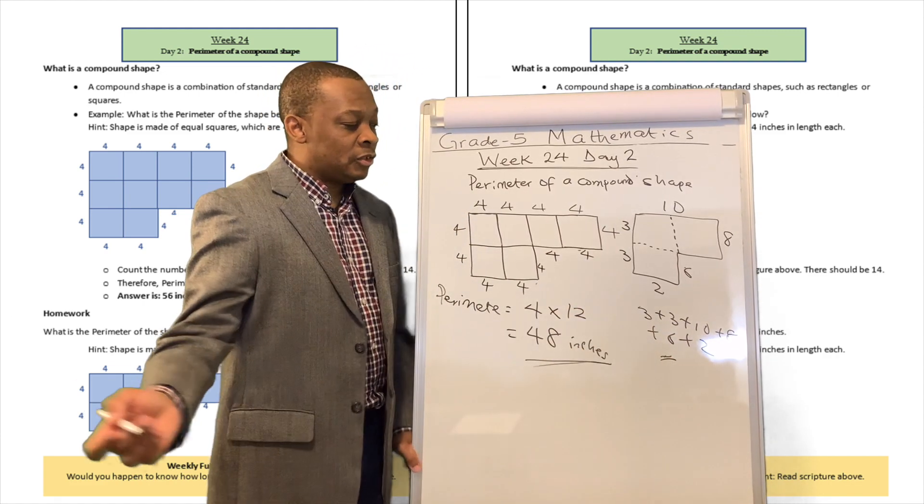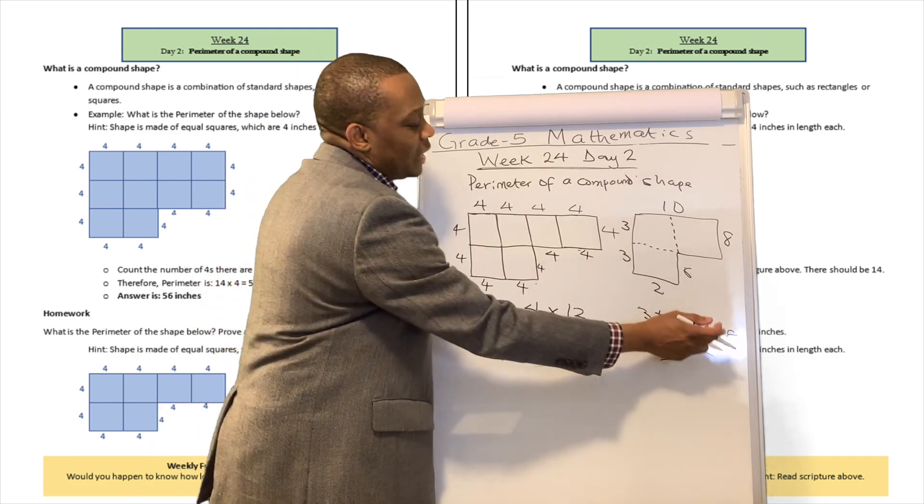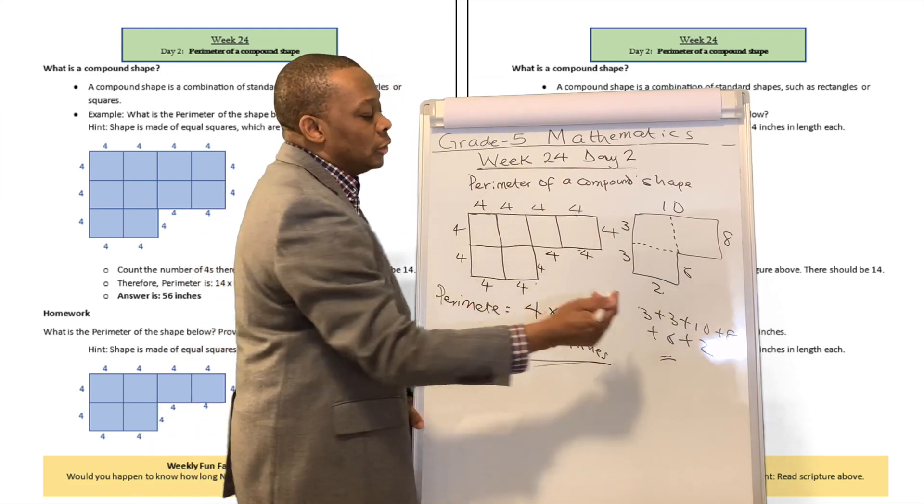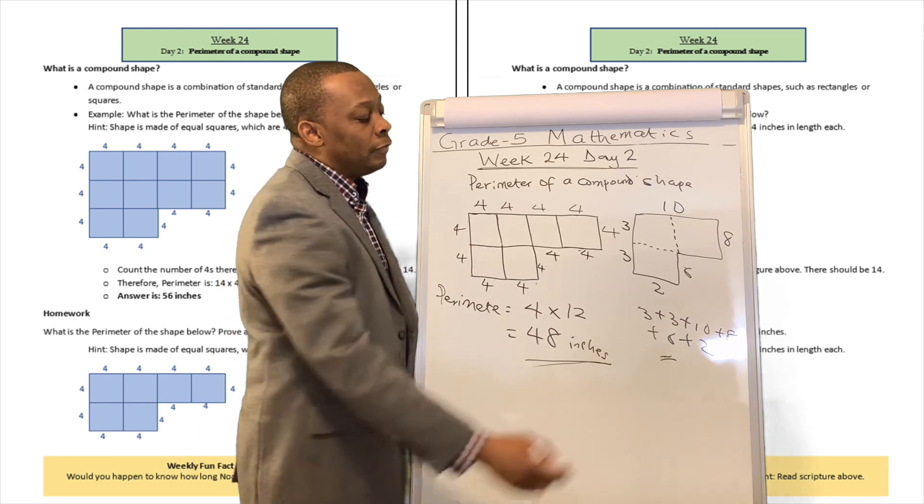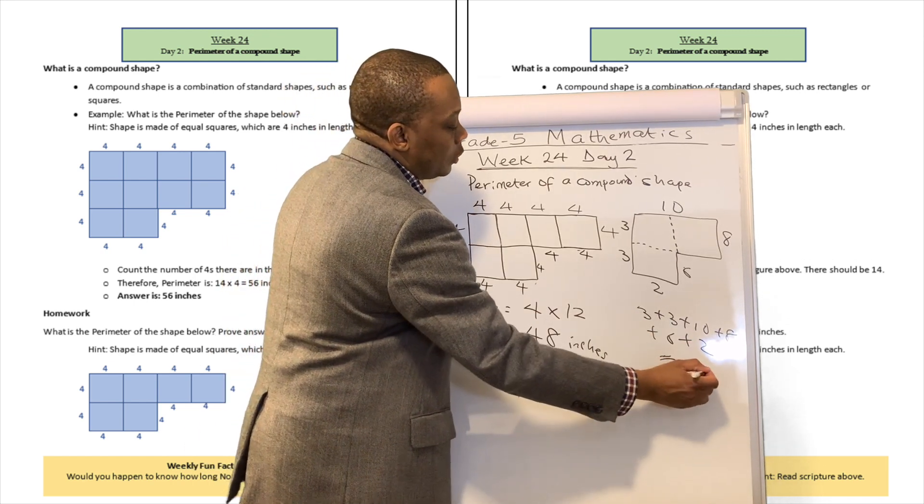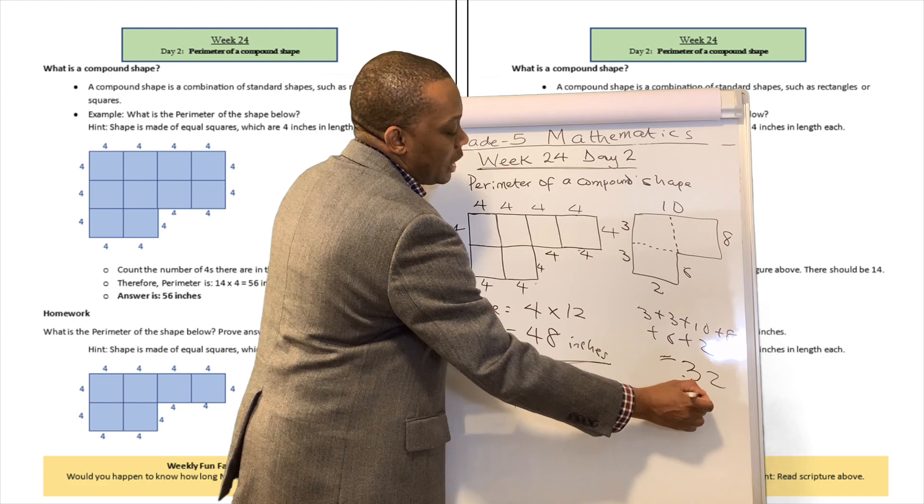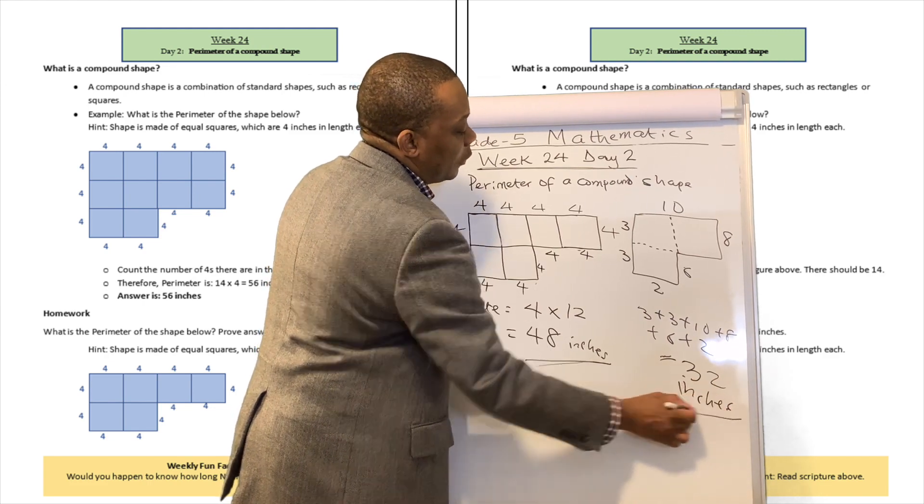3 plus 3 is 6. 6 plus 10 is going to be 16. 16 plus 8 is going to be 24. 24 plus 6 is going to be 30, and 30 plus 2 is going to be 32. Alright. So 32 inches in this case over there.